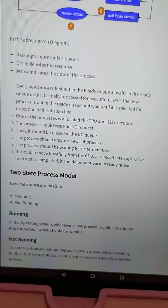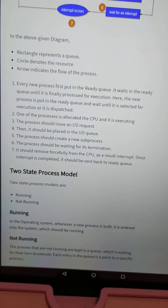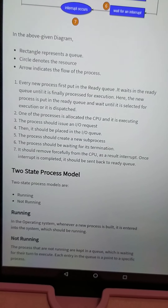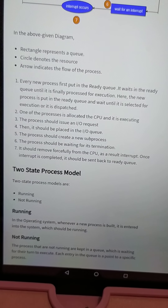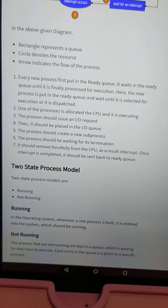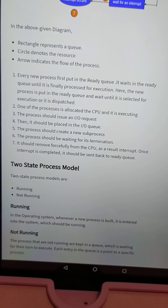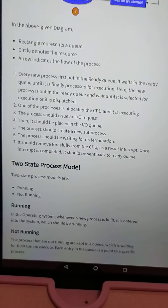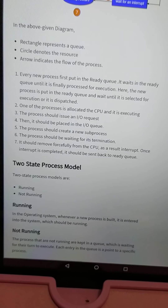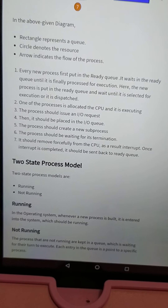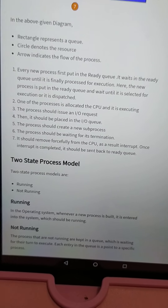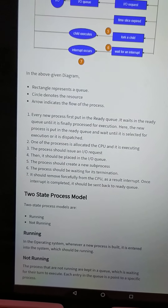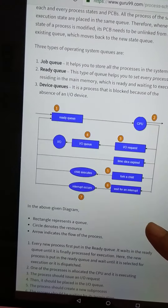The new process is put in the ready queue and waits until it is selected for execution. One of the processes is allocated the CPU and begins executing. By making use of these three types — device queue, ready queue, and job queue — processes are managed.